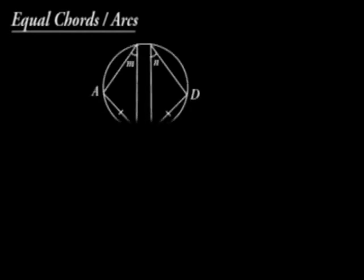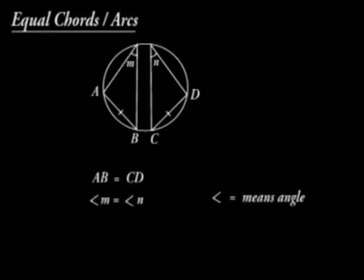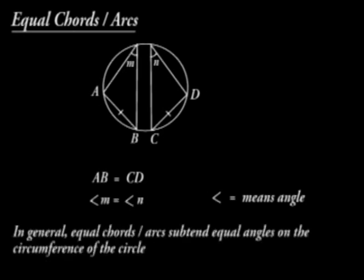Equal chords or arcs. Consider the figure below. AB is equal to CD. Angle M is equal to angle N. In general, equal chords or arcs subtend equal angles on the circumference of the circle.